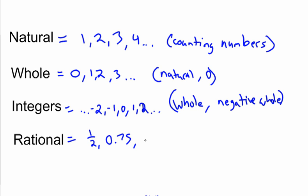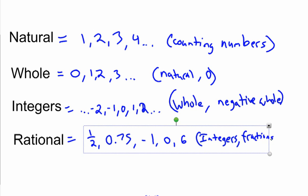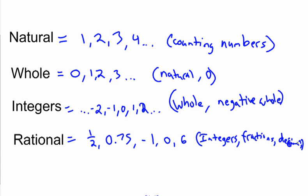It could be a negative number. It could be zero. It could be a whole number. So they're all the integers, and fractions, and decimals. So they're all numbers that make sense to us.